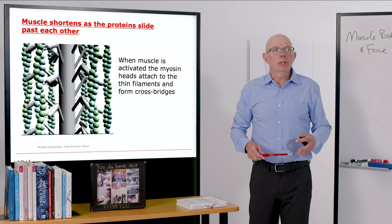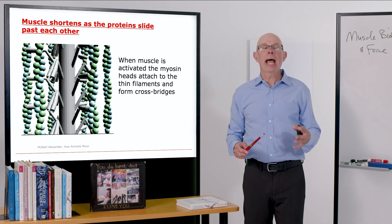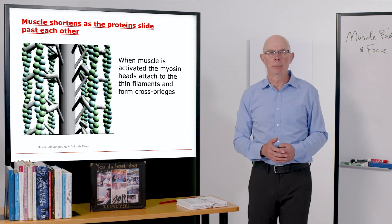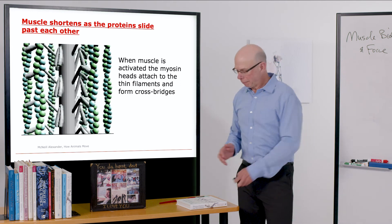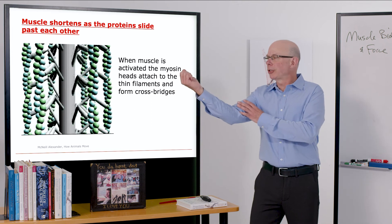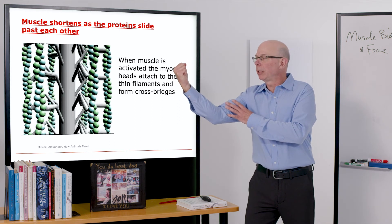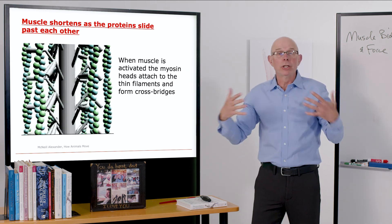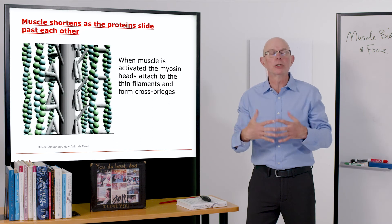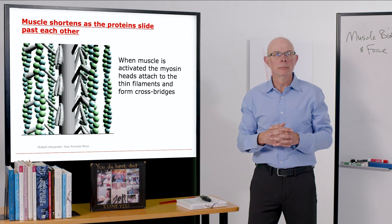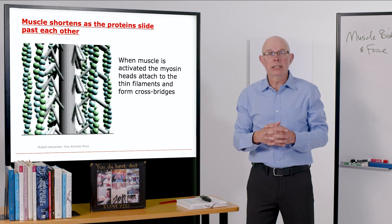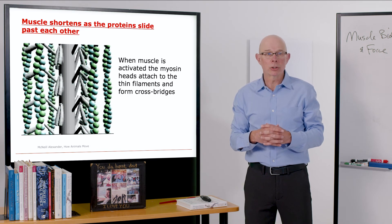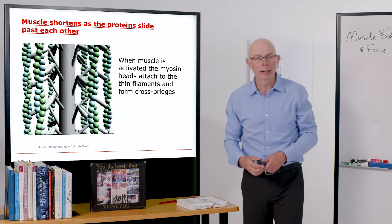When muscle is activated, the myosin heads attach to the thin filaments and form crossbridges. This is kind of a slow motion replay of what's happening in your muscle every time you excite it. The myosin filament reaches out, attaches to the actin filament, grabs onto the actin filament, and pulls it together. And it's trillions of these acting together that produce the very large forces that you get in skeletal muscle. Muscle shortens as these filaments slide past one another. The basic theory of muscle contraction is called this sliding filament theory.